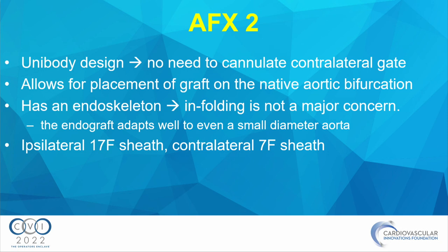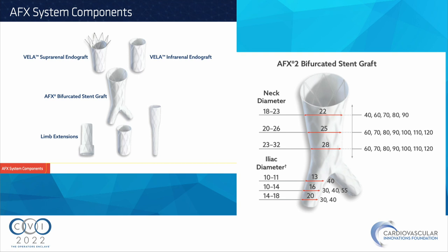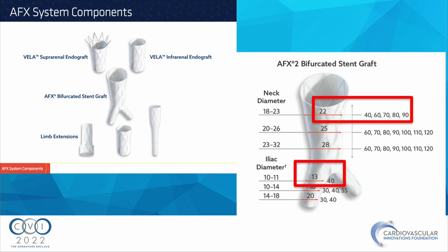The AFX2 requires an ipsilateral 17-French sheath and a contralateral 7-French sheath to deliver. The smallest device available is a 22-millimeter diameter device with multiple lengths and a 13-millimeter iliac diameter limb. Even though it's approved for an aorta of around 18 millimeters, it can actually be placed in a much smaller aorta without infolding of the material.